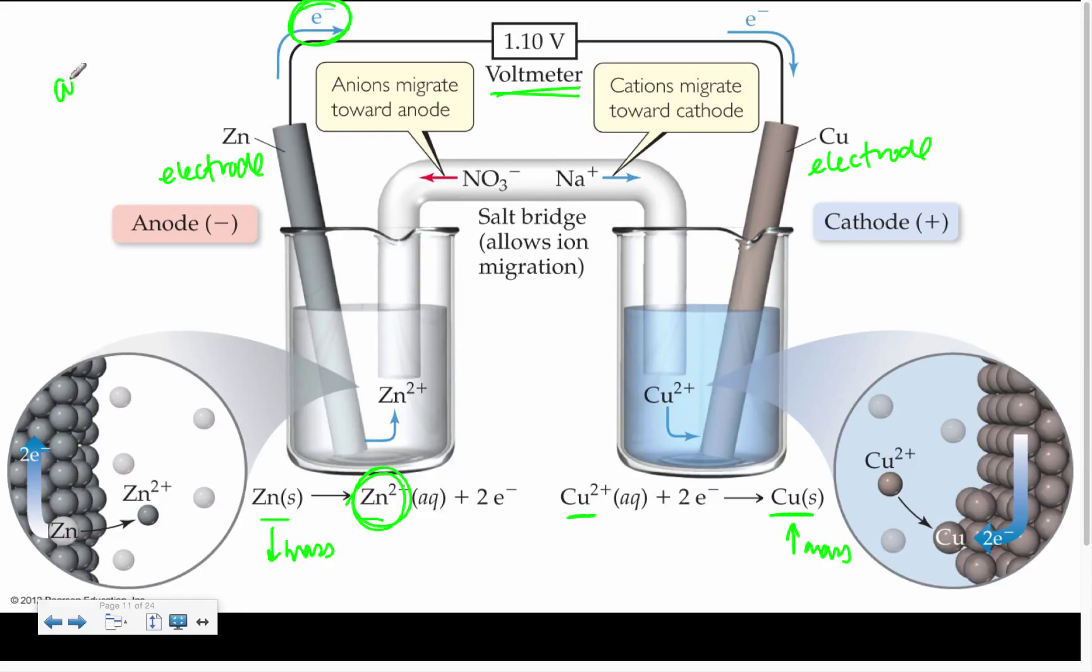Some people like those things to remember - anode for oxidation, reduction happens at the cathode. So the electrons are produced here and then go over there.